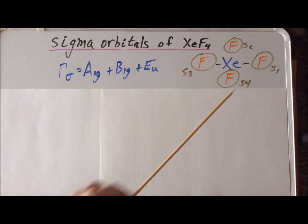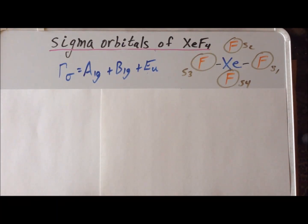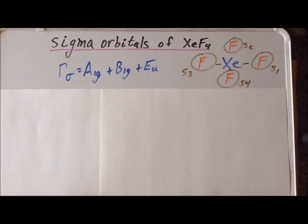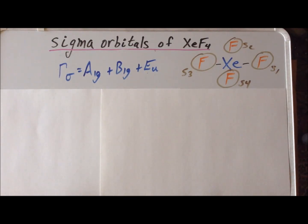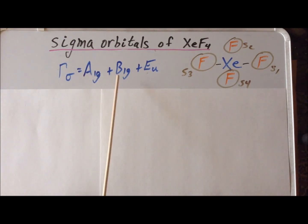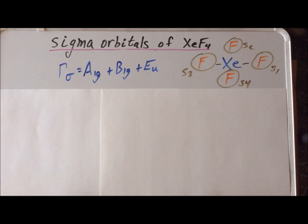Since we have four group orbitals, we need to have four symmetry-adapted linear combinations. While it looks like we only have three here, we recall that Eu is a doubly degenerate representation, so this counts as two. Each of A1g and B1g is non-degenerate, so two plus one plus one indeed gives us a total of four.